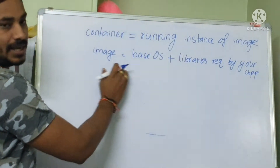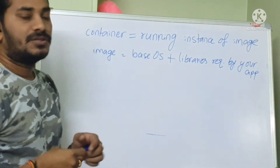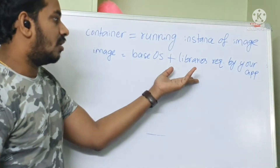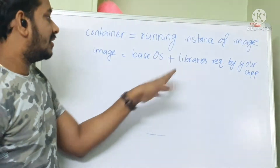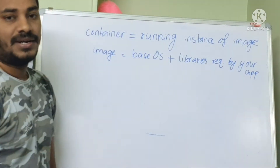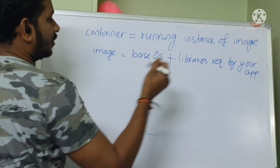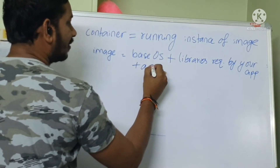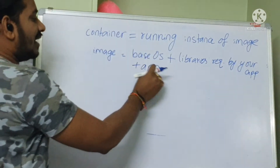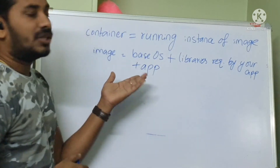Generally we build this image with a base OS and the libraries required — like the application runtime required by your application or some system packages. All these things together we call an image. If you run this image, you get a container. You copy your application into this image, and when you run this image you get a container which has your application. You can then directly access your containerized application through the browser.